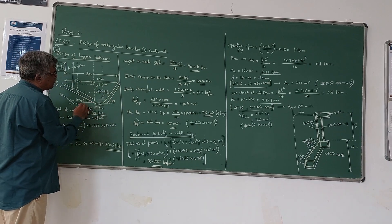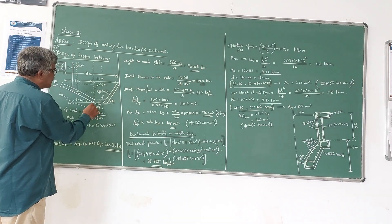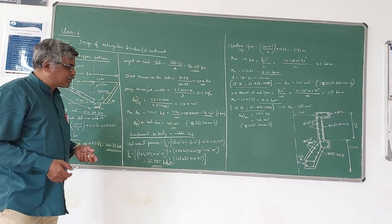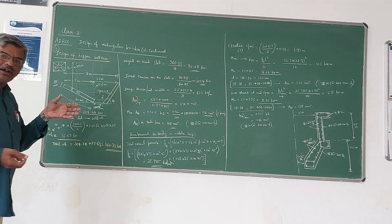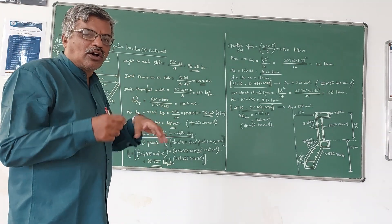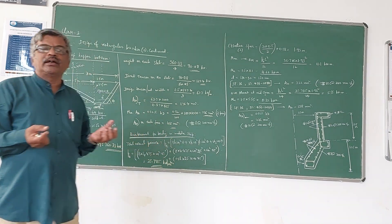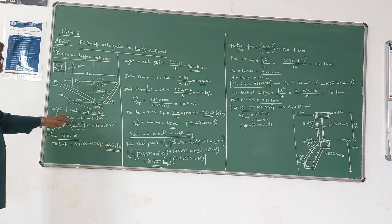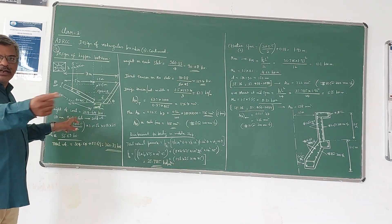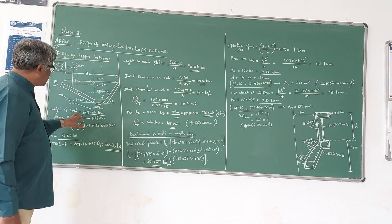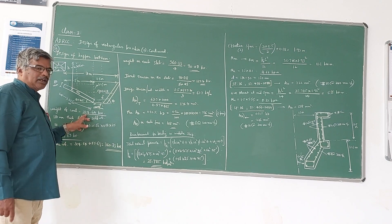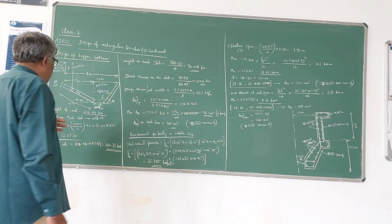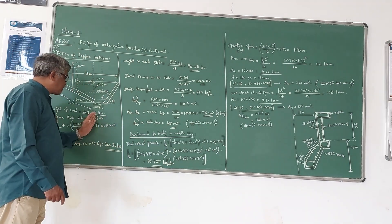Now let us see how we can design the upper bottom slab. First we have to calculate the total weight acting on all 4 slabs, then divide by 4 to get the weight on each slab. The weight of the material on the 4 slabs, as calculated in the earlier class, comes to 304.64 kN. So we have to design the bunker for this load.